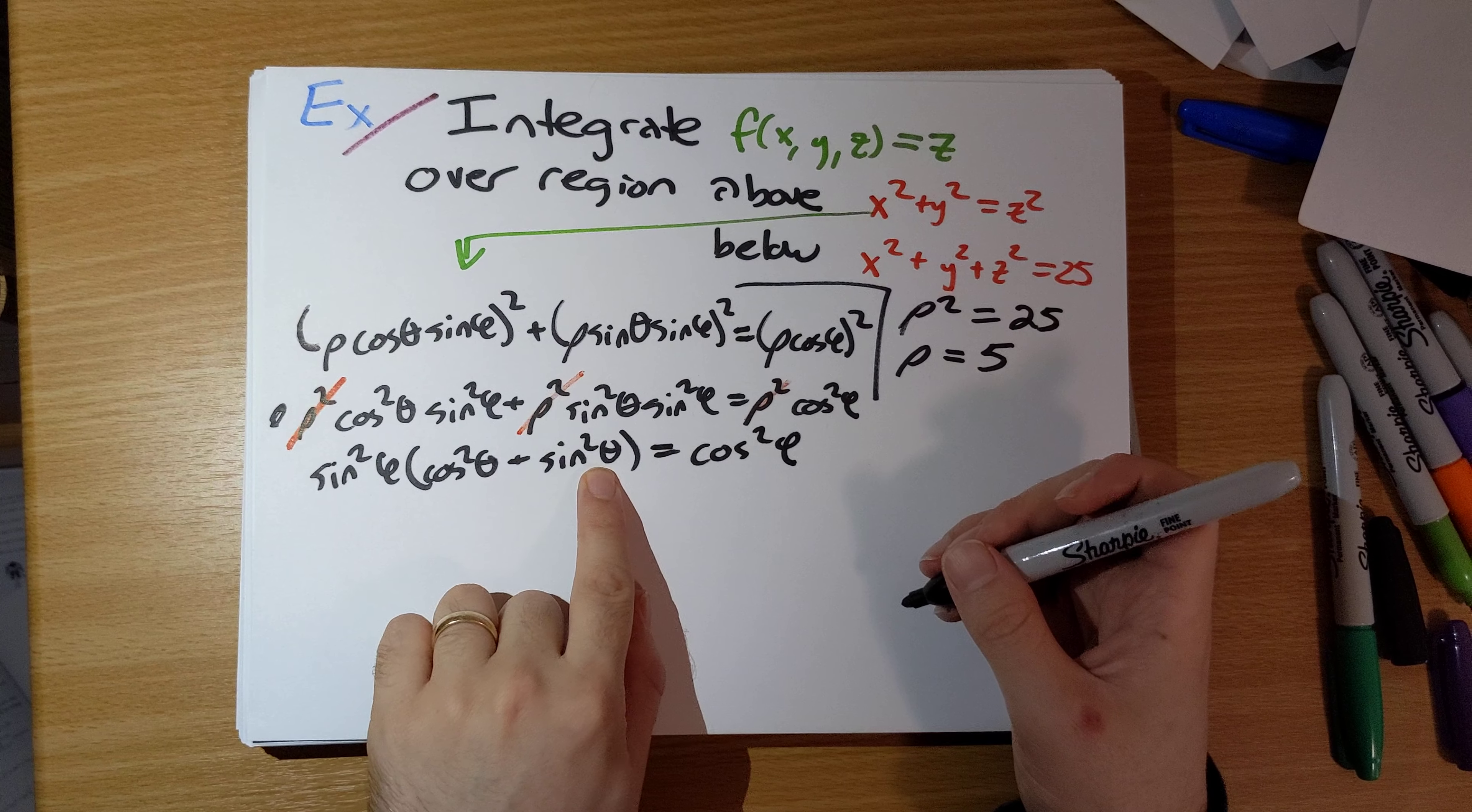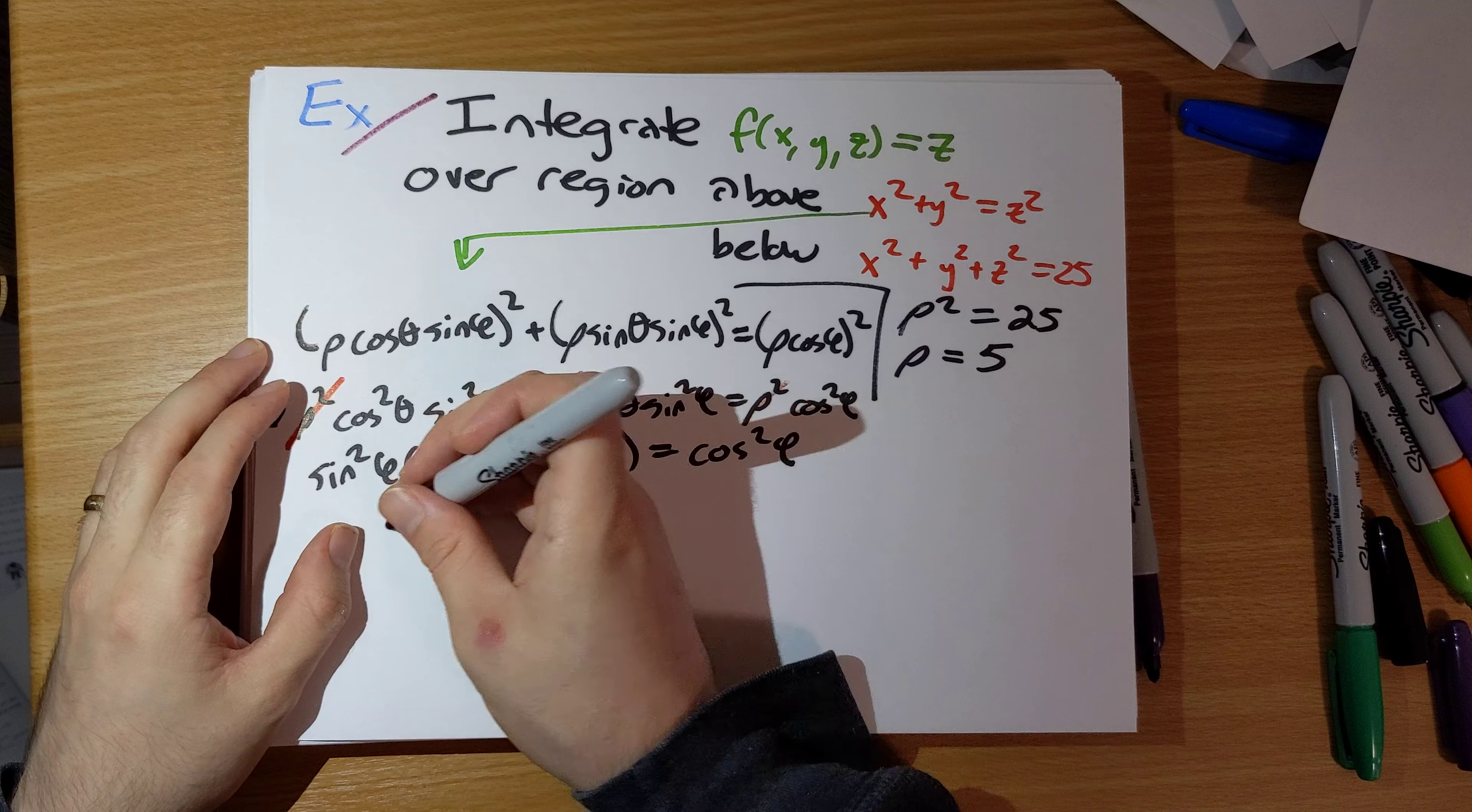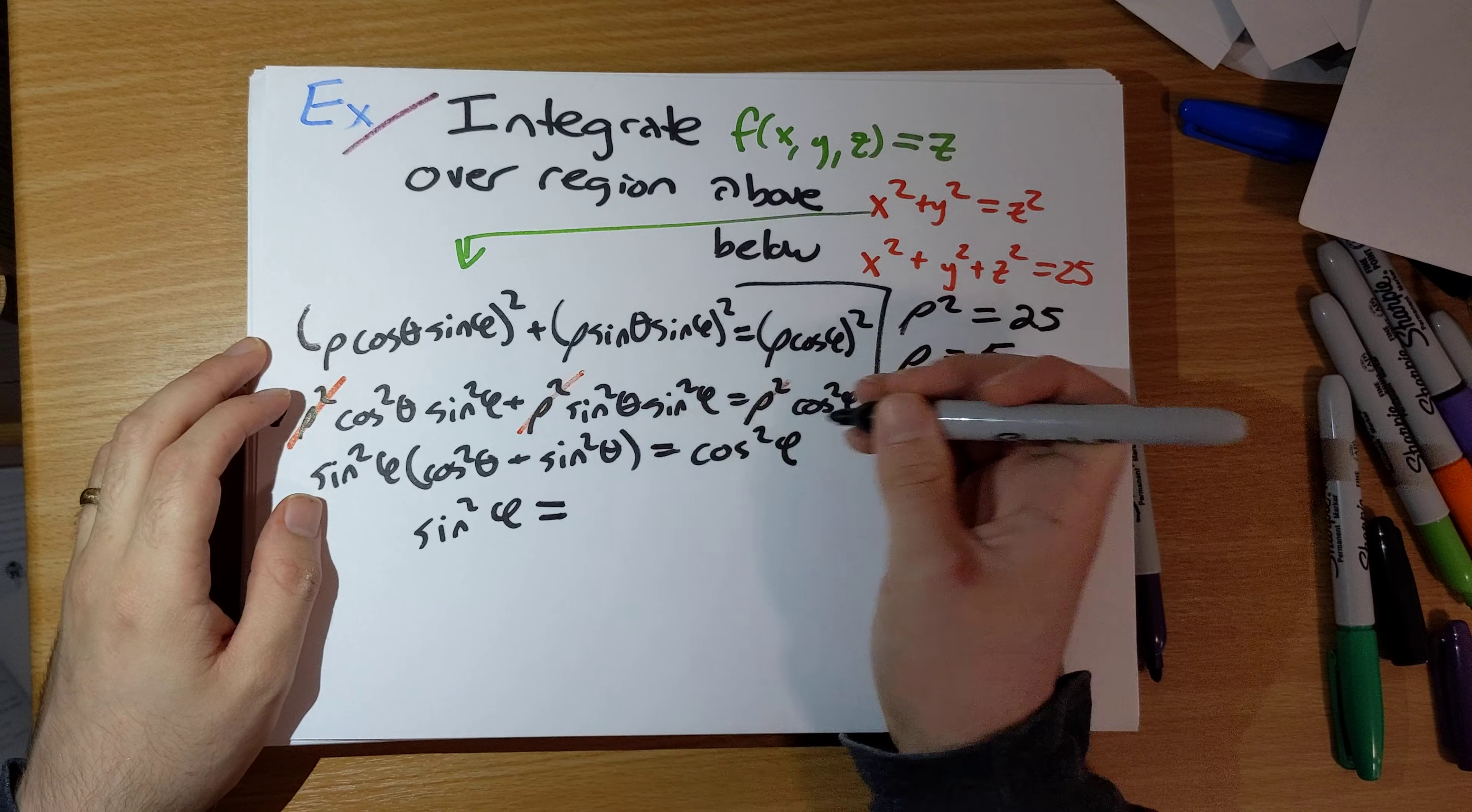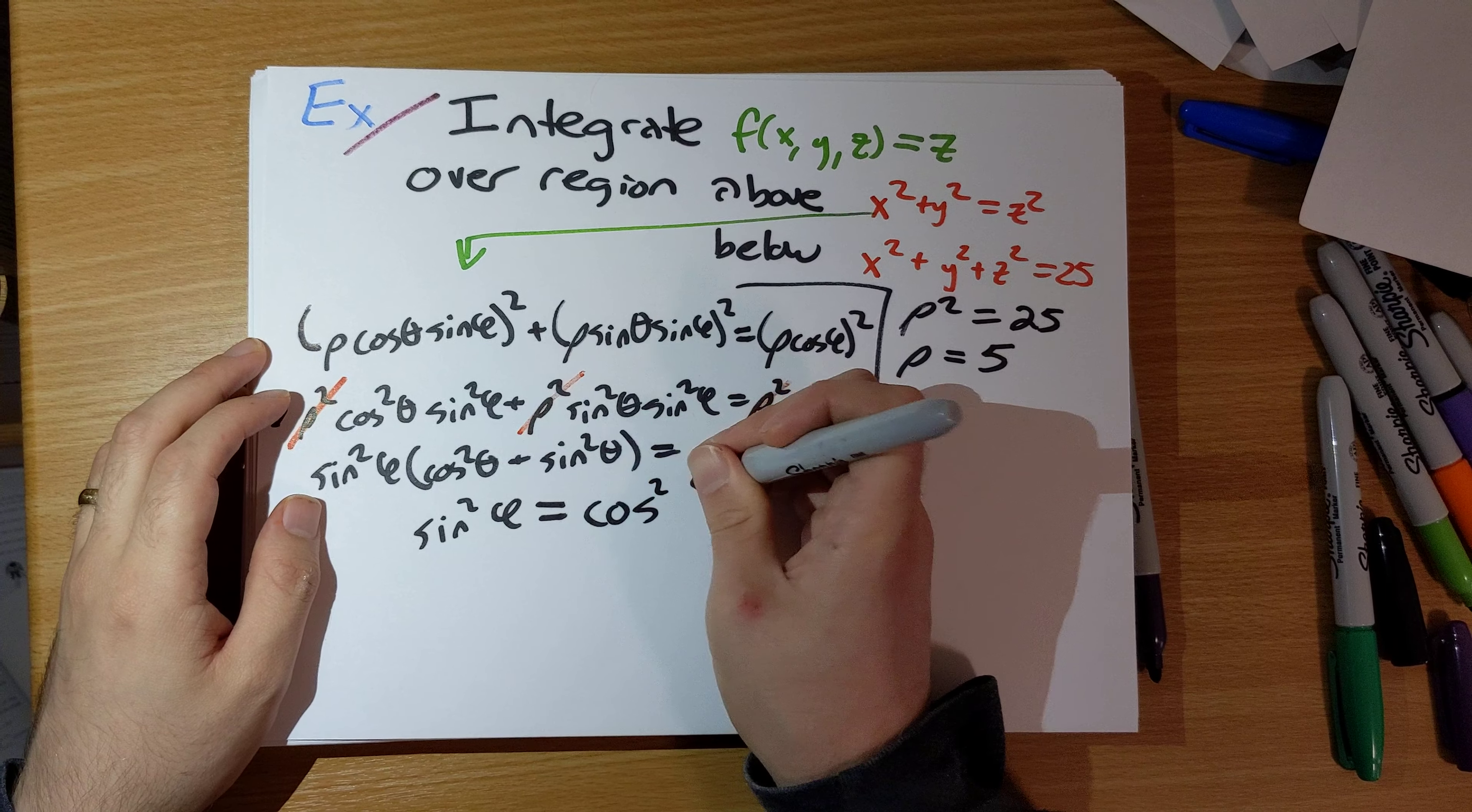Cosine squared theta plus sine squared theta is 1. So this is just sine squared phi equals cosine squared phi.